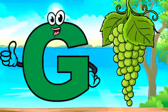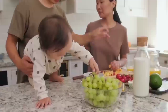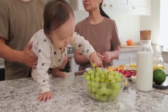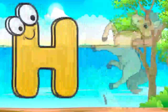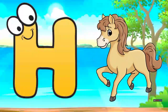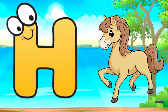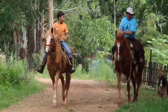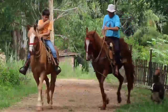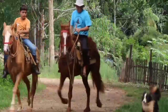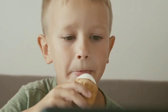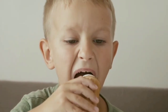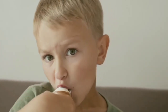G. G for grapes. Grapes means angoor. H. H for horse. Horse means cotta. I. I for ice cream. Ice cream means ice cream.